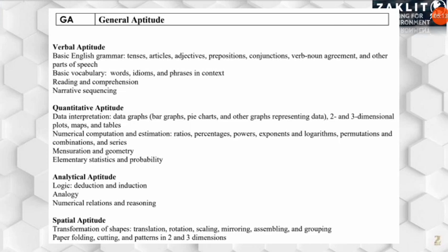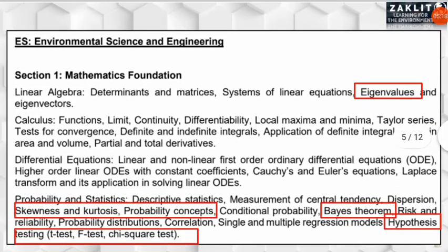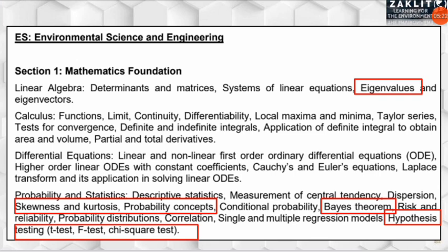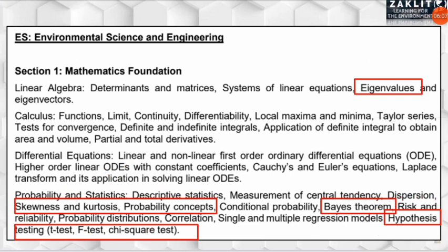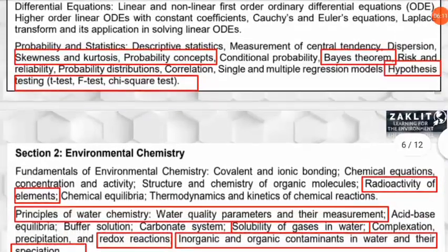Coming to the subject syllabus, I'll highlight topics common to both NET Environmental Science and GATE Environmental Science and Engineering. In Mathematics, topics like eigenvalues, skewness and kurtosis, probability concepts, Bayes' theorem, and hypothesis tests such as t-test, F-test, and chi-square test are all manageable and can be completed in less time.